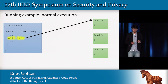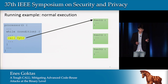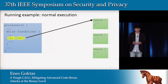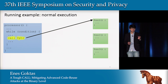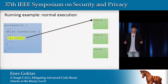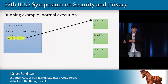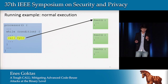Let me give you an idea of what advanced code reuse attacks are. Here we have a piece of code — a function that contains a while loop, which contains an indirect call. This indirect call uses the f pointer variable to call different functions. At runtime, this f pointer variable is loaded with the address of a function, and then it calls that function.